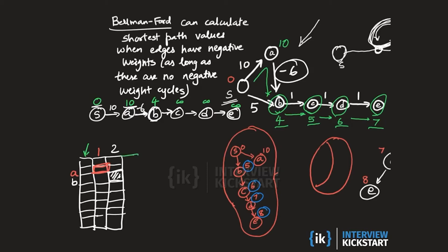Then when filling in the next column — where the number of hops is up to 3 — what value gets filled in for the shortest path from s to c? The shortest path distance to c using at most three edges is computed by looking at c's predecessor, which is b. The shortest path value from s to b using at most two edges was 4, so by adding the edge weight from b to c we update the shortest path value to c using at most three edges to be 5.